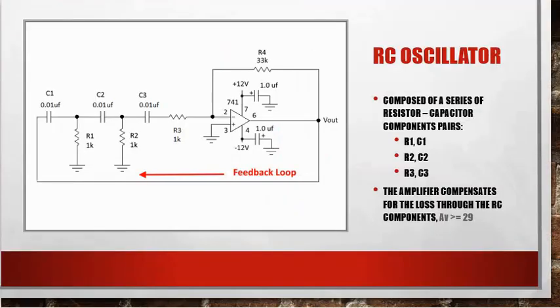So the first oscillator we'll look at is called an RC oscillator. It's composed of a series of resistor capacitors. So here's our resistor capacitor. Looks like a high-pass filter, another high-pass filter, and another high-pass filter. The amplifier compensates for the loss through the RC components, and typically you'll need a gain of at least 29 in this circuit for this to work properly. Our feedback loop is from V-out of our op-amp here. It comes back here, we lose a bunch of gain, and then we have to boost it back up.